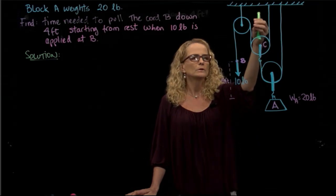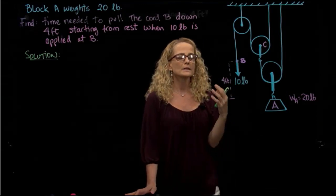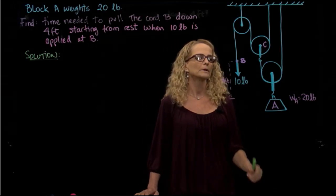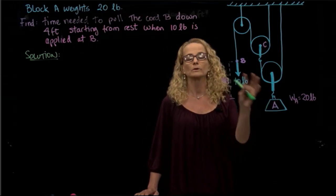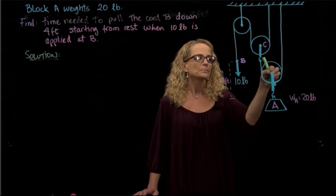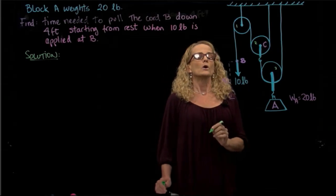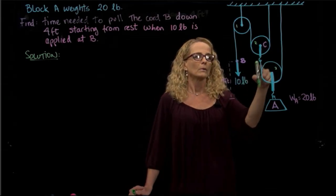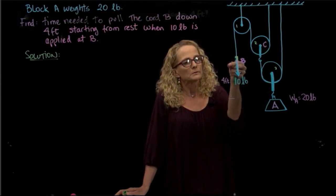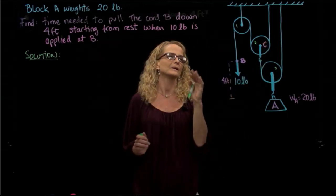Pulley C is going to go up, and block A is going to go up too. In order to apply our equations of motion — the only mass we have is A — so the equations will be applied where our mass is. If we apply our equations at pulley 3, we need to know: if we move point B four feet, how much is block A going to move up? So the first thing we have to do is find the kinematic relation between the pulleys.